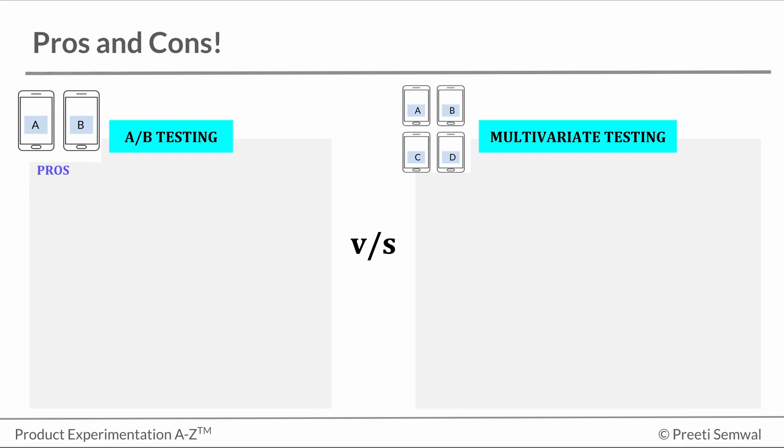Pros of A-B testing: A-B tests are relatively simple to design and execute. It is possible to generate statistically significant results with smaller traffic samples relative to multivariate tests. A-B test provides straightforward results that are easier for non-quantitative business teams to interpret and implement.